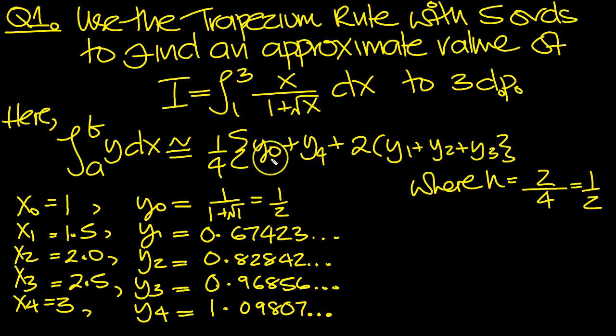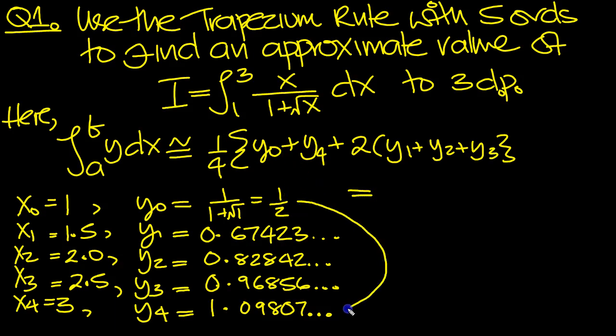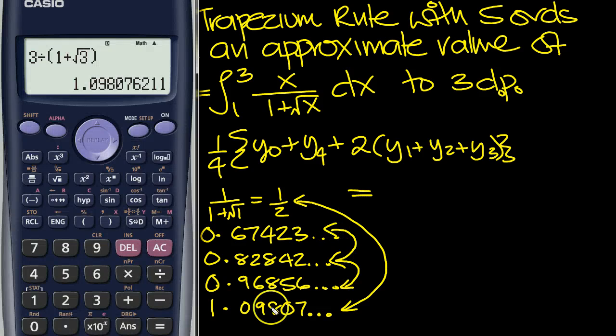So let's do that then. So this is equal to then. And we'll just tap it in directly into the calculator then. So it's 0.25, y0 plus y4. So these two, plus 2 times the three values in between added together. Okay, so let's get our calculator then.